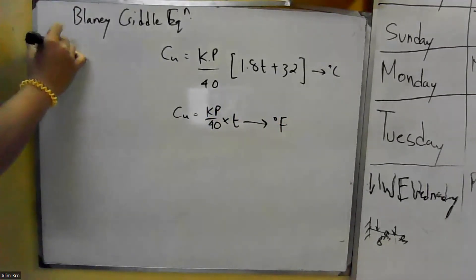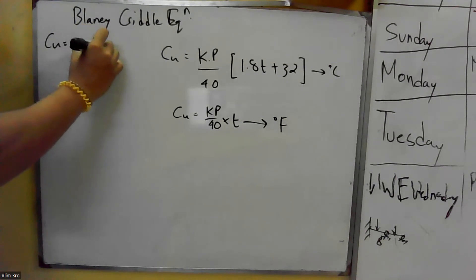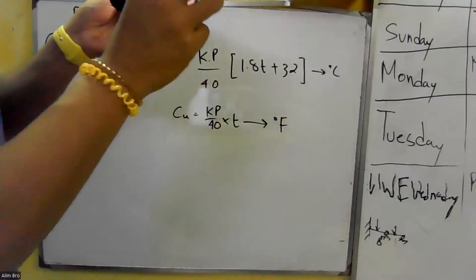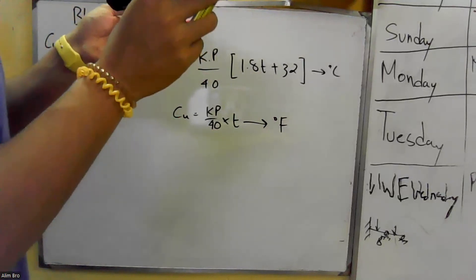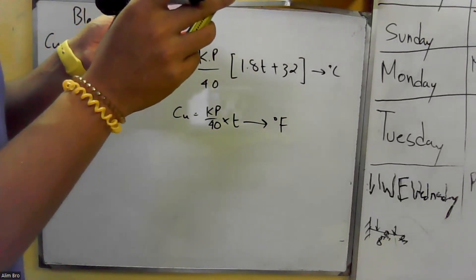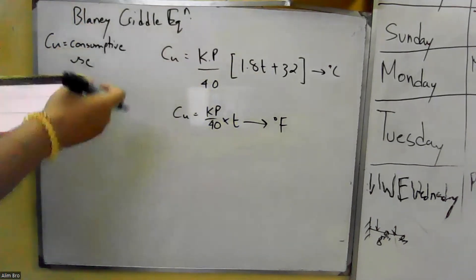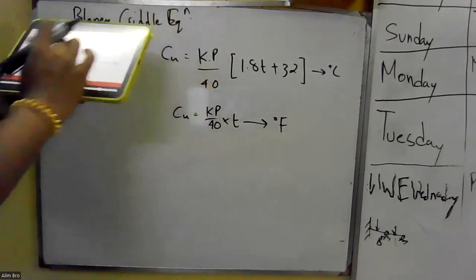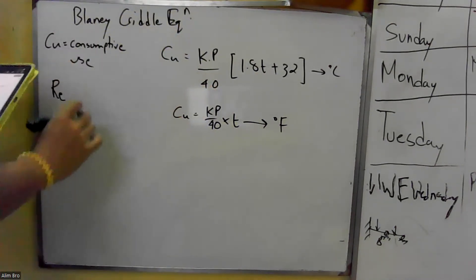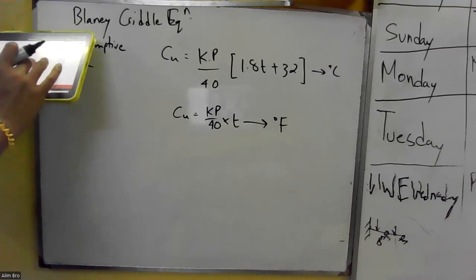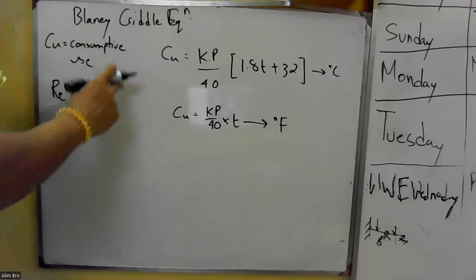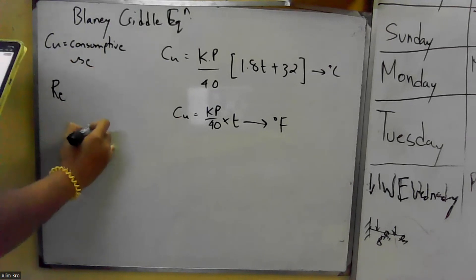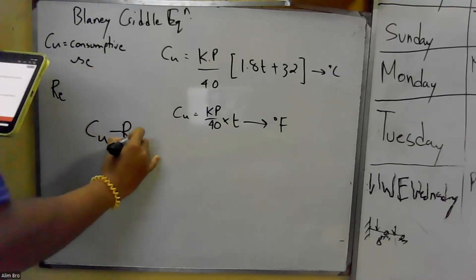Consumptive use, by definition, means the amount of water required to meet the evapotranspiration during the full growth period of a plant. Net irrigation requirement equals consumptive use minus effective rainfall.